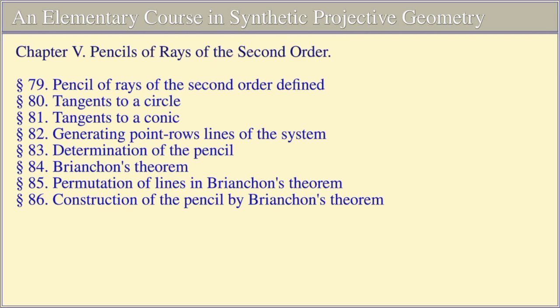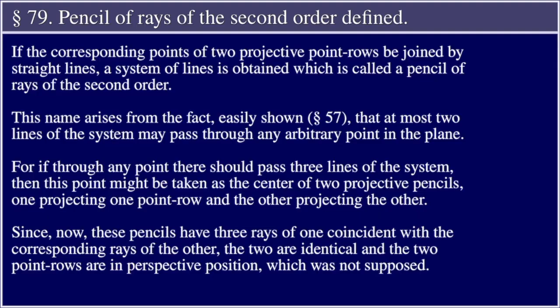Section 83: Determination of the Pencil. Section 84: Brianchon's Theorem. Section 85: Permutation of Lines in Brianchon's Theorem. Section 86: Construction of the Pencil by Brianchon's Theorem.